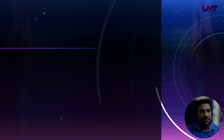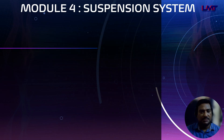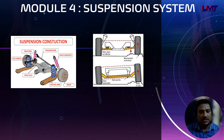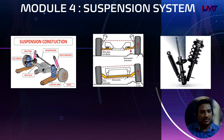Module four covers the suspension system. In this module we are going to learn the construction methods and different types of suspension systems — for example, independent suspension system and telescopic suspension system. We are also going to see a detailed explanation of shock absorbers, various components of shock absorbers, and testing of shock absorbers.